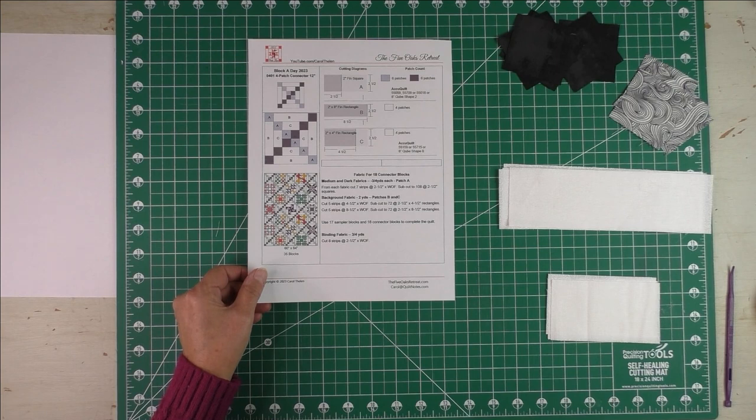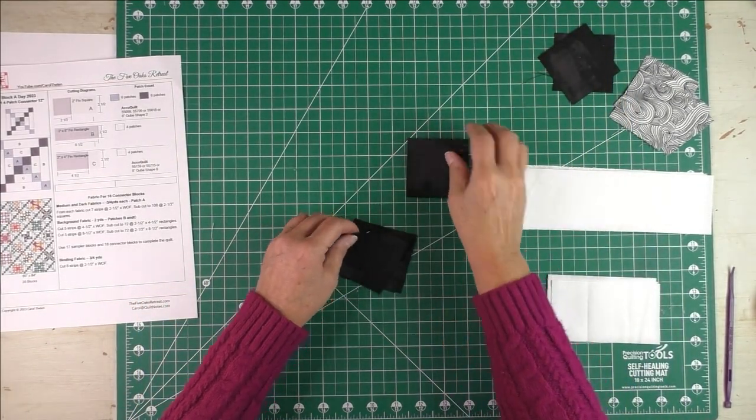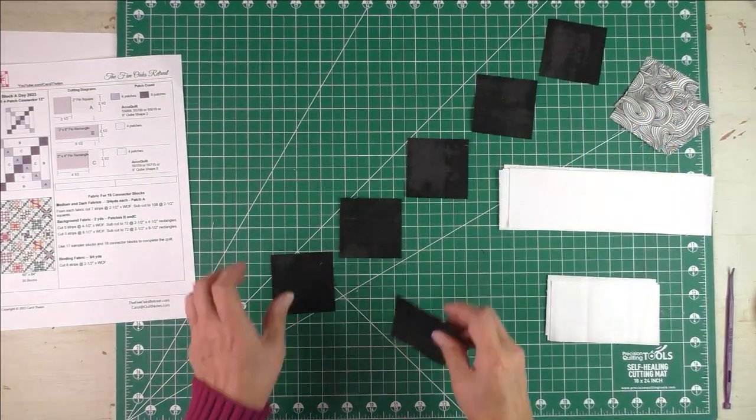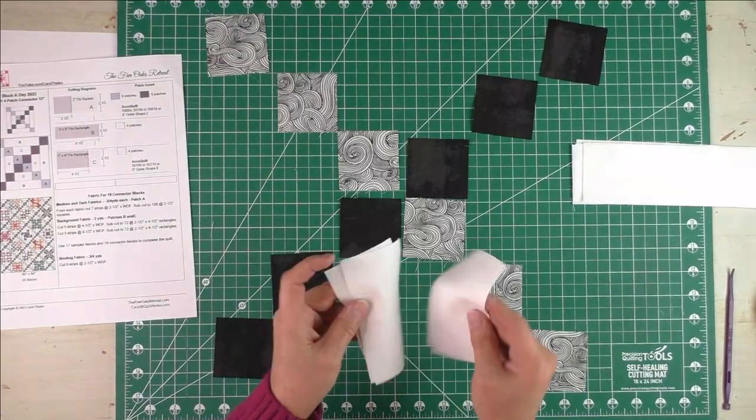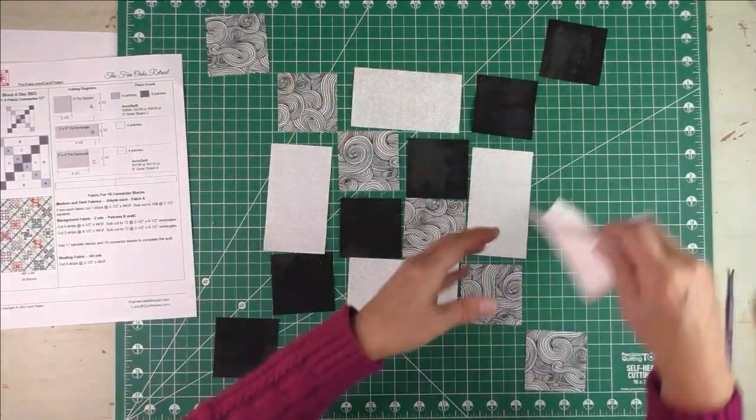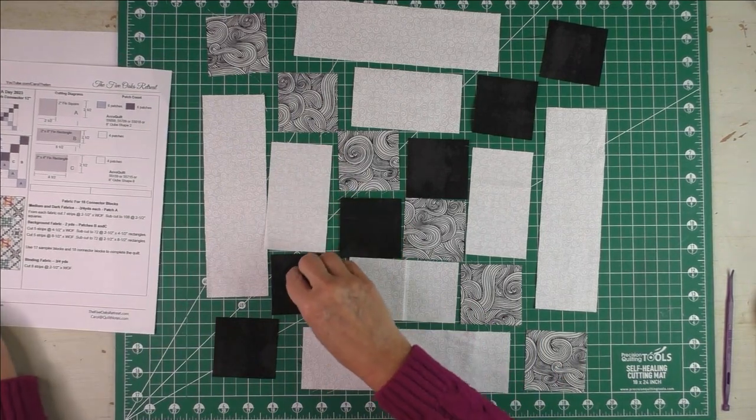We'll start with the four patch in the center. When I stitch this together, I'm going to start in the middle and piece this four patch.